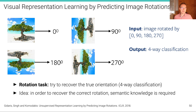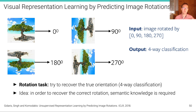The image rotation prediction task, already seen in the introduction, requires predicting in which orientation a displayed image is shown. Images are artificially rotated and the output is a four-way classification to recover the true orientation. Again, the premise is that semantic knowledge is required to correctly recover the canonical orientation.